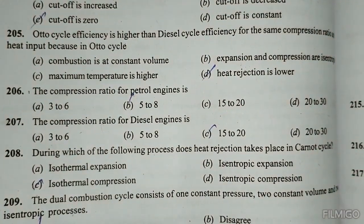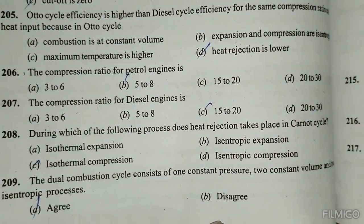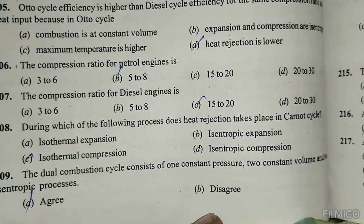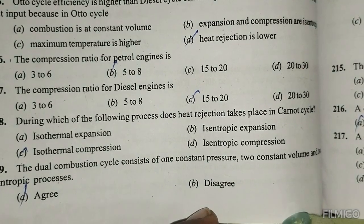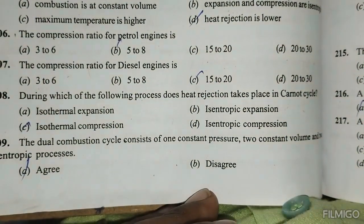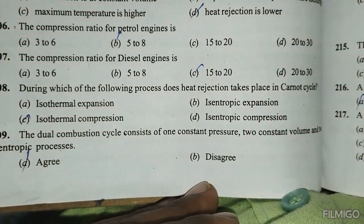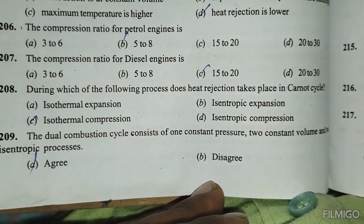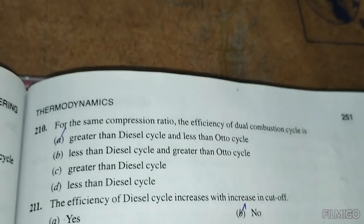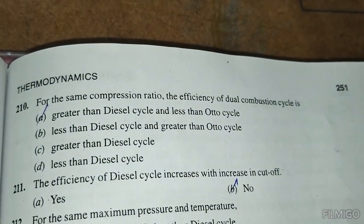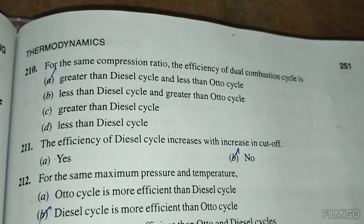The compression ratio for a petrol engine is 5 to 8. The compression ratio for a diesel engine is 15 to 20. In the Carnot cycle, heat rejection does not take place during isothermal compression. The dual compression cycle consists of 1 constant pressure, 2 constant volume, and isentropic processes. For the same compression ratio, the efficiency of the dual compression cycle is greater than the Diesel cycle and less than the Otto cycle.